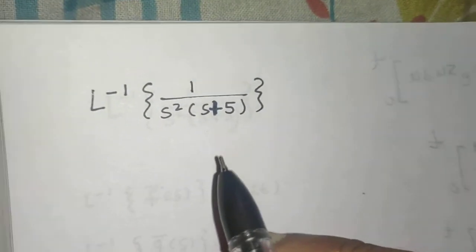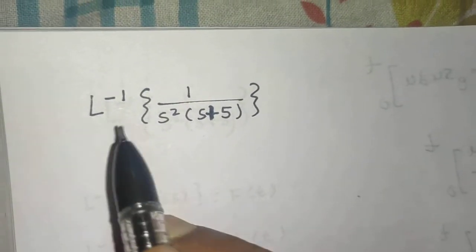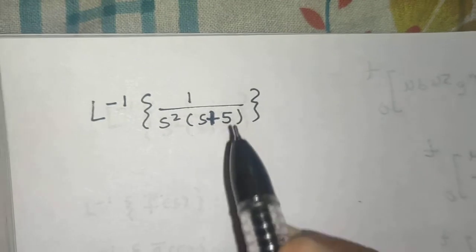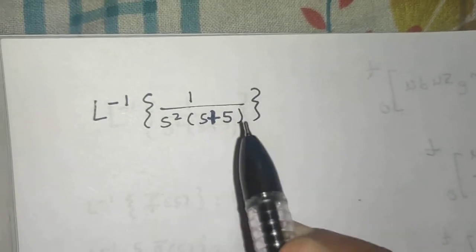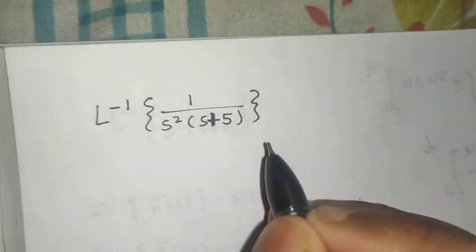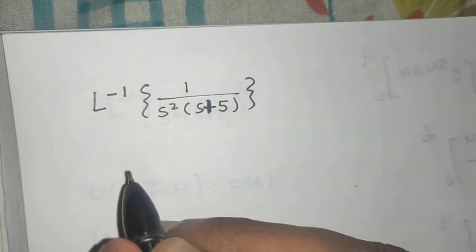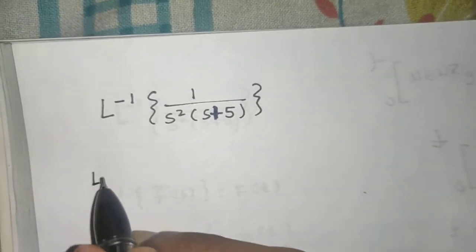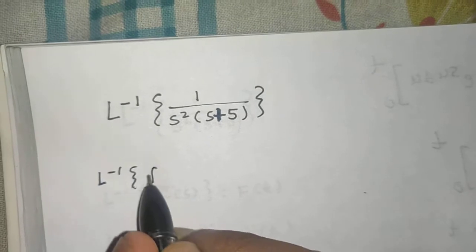Let's look at a question from inverse Laplace transform. We need to find the inverse Laplace transform of 1 upon s squared times (s squared plus 5). So let's flash back into the convolution theorem.